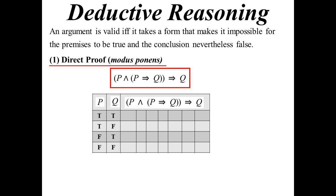There are only four possibilities this time because we're only talking about two statements. Filling down the P's and Q's — there are no negations, so I'm just filling in those trues and falses. Working inside out: P implies Q. The only one that's false is true implies false, because the logical value requires it to be impossible for the conclusion to be false. True implies false is no good; all the others are fine.